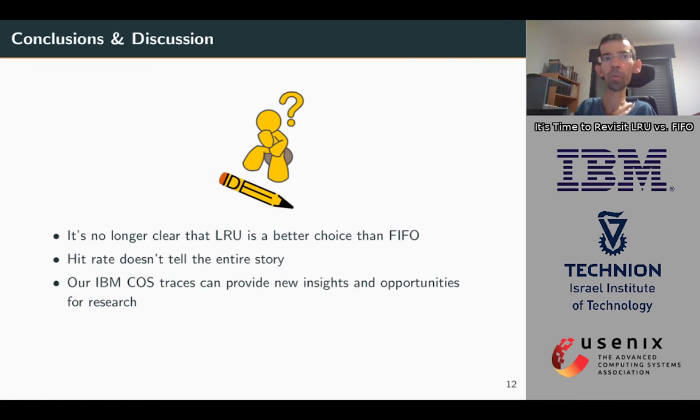Here we have only one configuration of 1 to 50 ratio of latency and 30% cache size, but other configurations are presented in the paper. So after all, what are the main takeouts from this talk? First, it is no longer clear that LRU is better than FIFO. And in fact, in many occasions, FIFO is better. Second, hit rate doesn't tell the entire story. Especially when the metadata does not fit in memory, we should take the latency cost into account. We hope our traces can provide new insights and opportunities for your research. Feel free to use them.